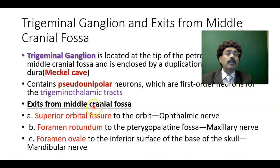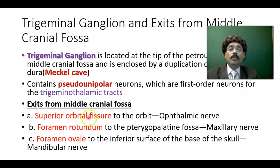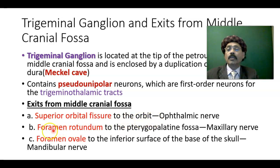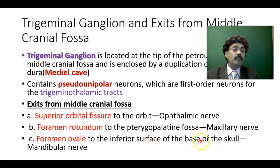Regarding exits from the middle cranial fossa: the cavernous sinus contains the ophthalmic and maxillary divisions of the trigeminal nerve. The superior orbital fissure is the exit for the ophthalmic nerve to the orbit. Foramen rotundum is the exit for the maxillary nerve to the pterygopalatine fossa. Foramen ovale is the exit route for the mandibular nerve to the inferior surface of the base of the skull.